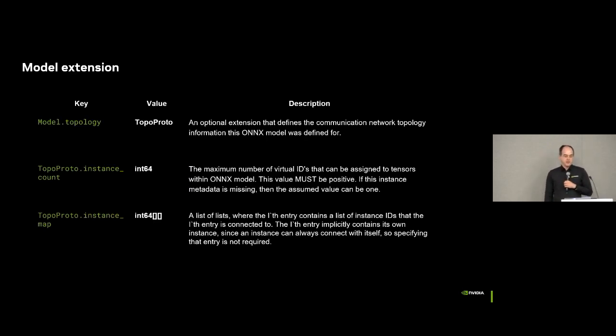First, let's talk about the topology. The topology is a new protobuf entry with two fields. The first is the instance count, and this is the maximum number of instances the model is being built for. The second one is the instance map. This is a list of lists, and it contains for each instance you have up to N instances as part of the sublist. And so this is how you map the different topologies. Now, this is just what the model extension looks like, but it's a lot easier to show you examples.